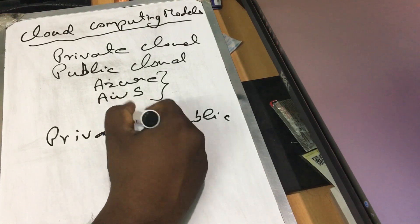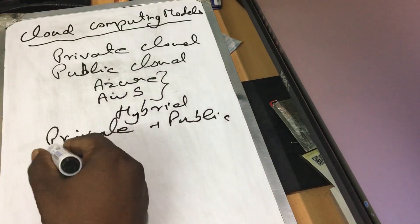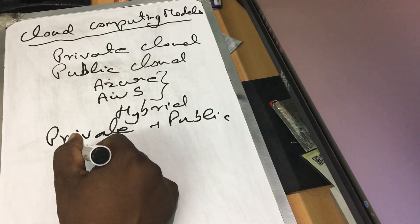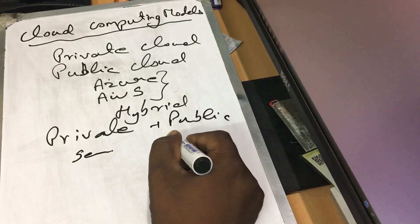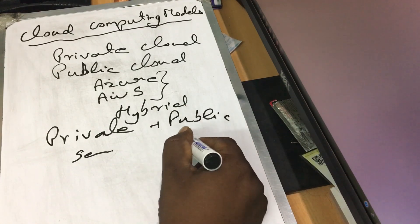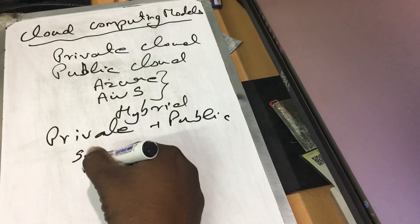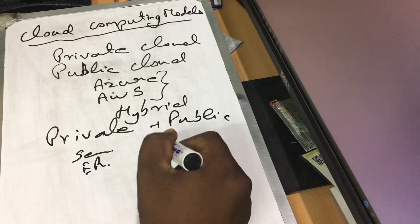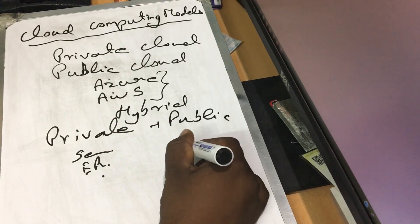Hybrid cloud combines both. We can use private cloud for secure data flow. We use secure data, growth, and performance on the private side. We use public cloud for an ERP application. We create a mobile application and a back-end service.